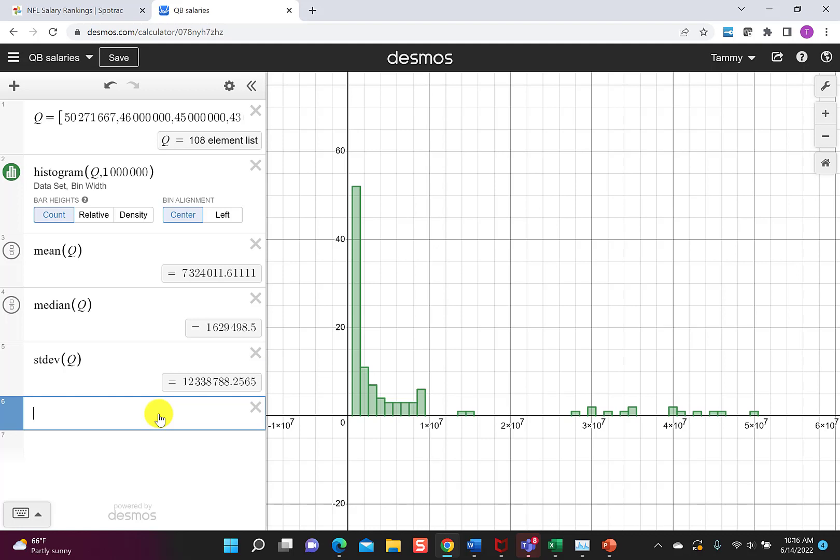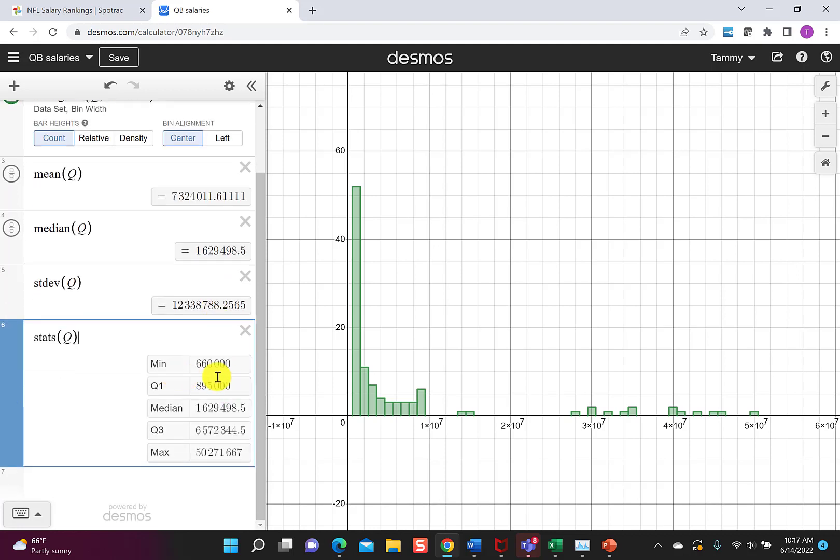It doesn't give you a good feeling like, do I really know how this is proportioned out? Like what did the players' salaries look like? So I'm going to type this other thing called stats of Q. And this is going to tell me a lot. So the stats tells me the minimum value was $660,000. So the person making the least amount of money out of these 108 players that I grabbed was $660,000.